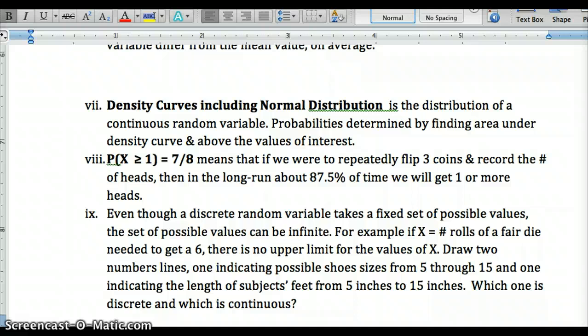Again, shoe sizes, 5 through 15, and lengths of subjects' feet, 5 inches to 15 inches. Which one of those is discrete, meaning fixed set of values? Which one of those is continuous, meaning it can take on a whole interval? Well, the answer is shoe size would be discrete, because you could have 5, 5.5, 6, 6.5, and length would be continuous, because you could have 5.34 inches, 14.3256 inches. So it could take on any number in the interval.